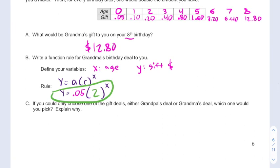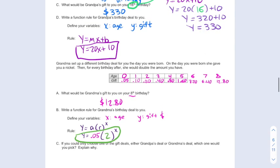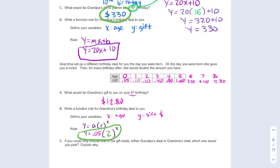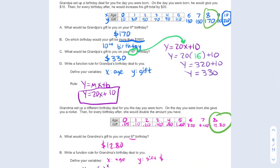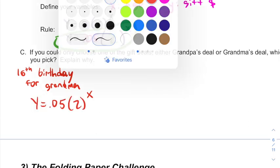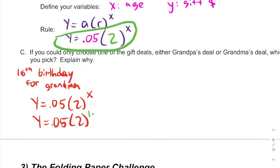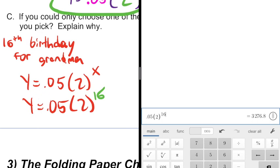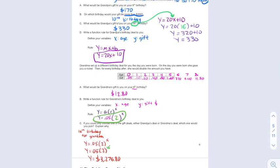Now they ask us, if we could choose one of these two deals, which one would we take? Well since we got grandpa's gift all the way out to our sixteenth birthday, I know that's three hundred and thirty dollars. Let's take a look. Early on after eight birthdays, grandpa's given us a lot more money. Let's see what happens after sixteen birthdays. For grandma, we're going to use this model, and we're going to replace that x with sixteen. And at this point, grandma's giving us three thousand two hundred and seventy six dollars and eighty cents. That's a lot more than that three hundred and thirty dollar gift that grandpa's giving us.